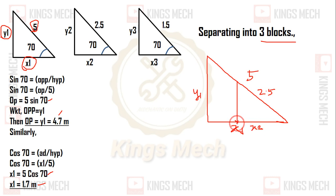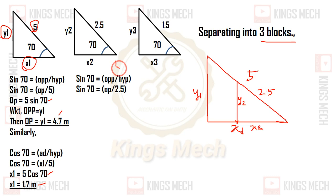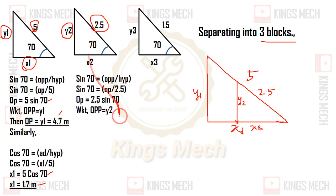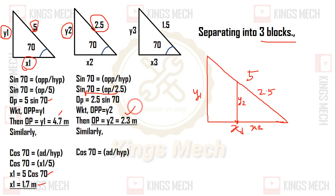For the midpoint where the ladder's weight acts, at 2.5 meters along the ladder: sin 70 equals opposite over hypotenuse, where opposite is y2 and hypotenuse is 2.5, so y2 equals 2.5 × sin 70 equals 2.3 meters. cos 70 equals adjacent over hypotenuse, where adjacent is x2 and hypotenuse is 2.5.